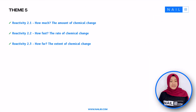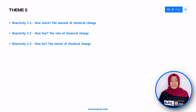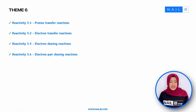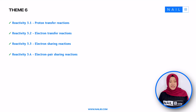Theme 5 is divided into three different topics, focusing on the rate of chemical reaction, the amount of reactant consumed, how fast the reaction occurs, and the completeness of a chemical reaction. The last theme is divided into four different topics: proton transfer and electron transfer reactions, and also electron sharing and electron pair sharing reactions.